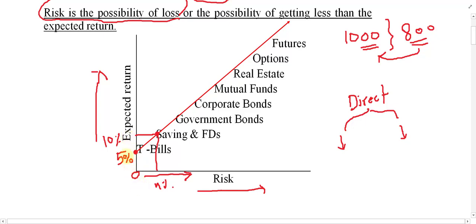The first security had risk of zero but return of just five percent. As you move upward in the sequence, risk increases and return also increases. In the case of government bonds, return might be fifteen percent, but there is also a chance of risk — risk might be eight percent. So as risk increases, return also increases, confirming the direct relation between risk and return.